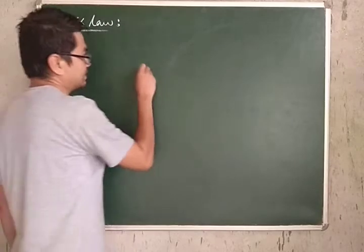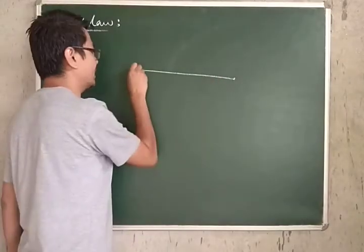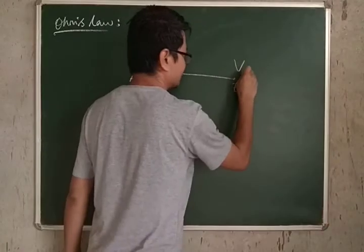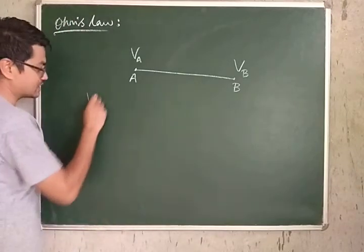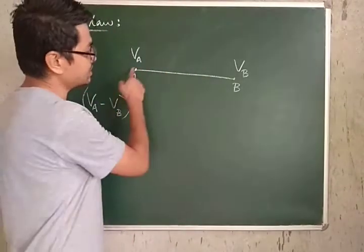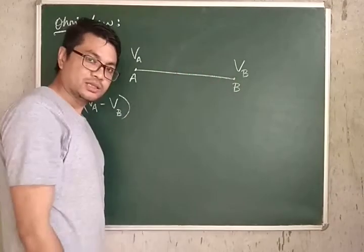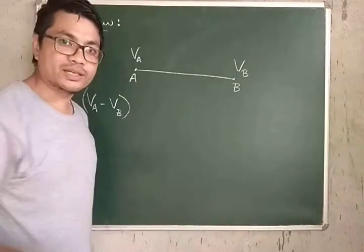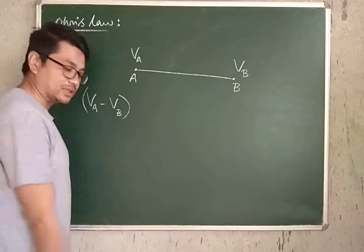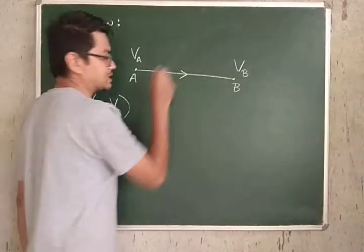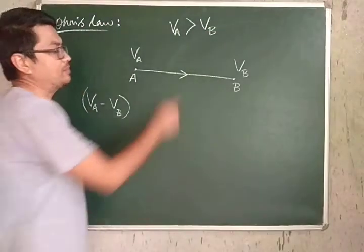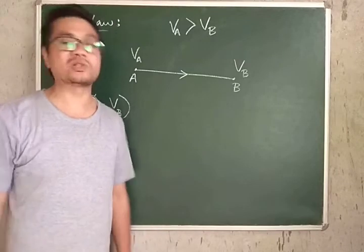Consider a conductor — a wire — with point A having potential VA and point B having potential VB. The potential difference between A and B is VA minus VB. Ohm's law tells us that whenever there is a potential difference between two points connected by a conductor, there is a flow of current from the higher potential to the lower potential.